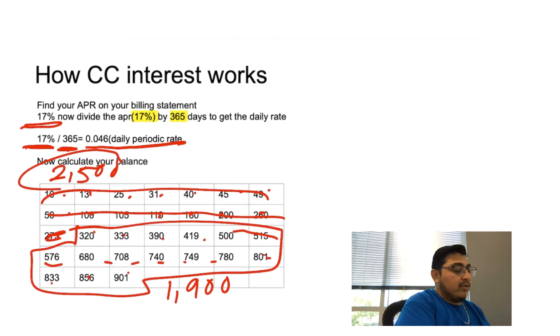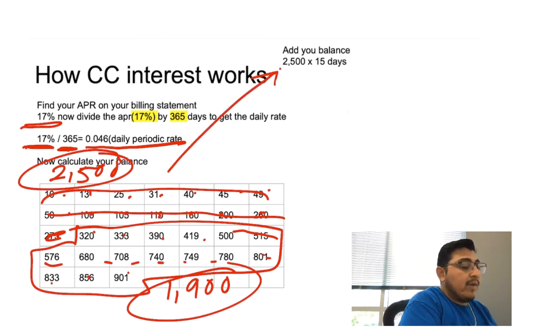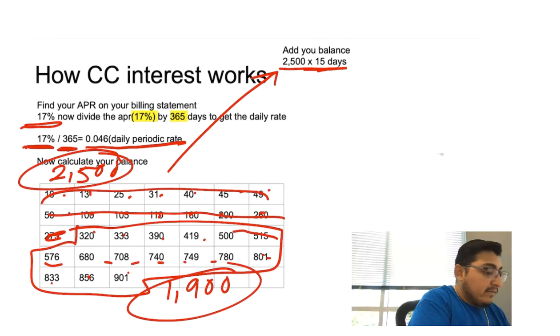You started your billing cycle with a balance of $2,500, and now you added an extra $1,900. Now we're going to do a little bit more math. We're going to multiply that $2,500 by the first 15 days, because that was your balance for each day for those 15 days, which gives you a total of $37,500.